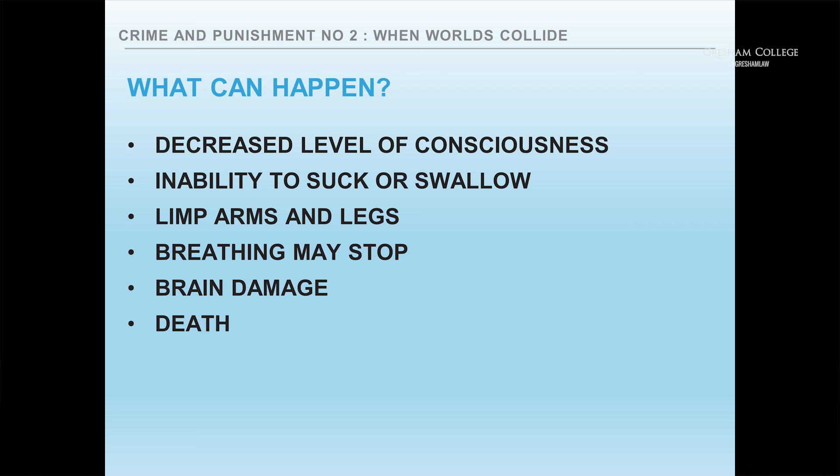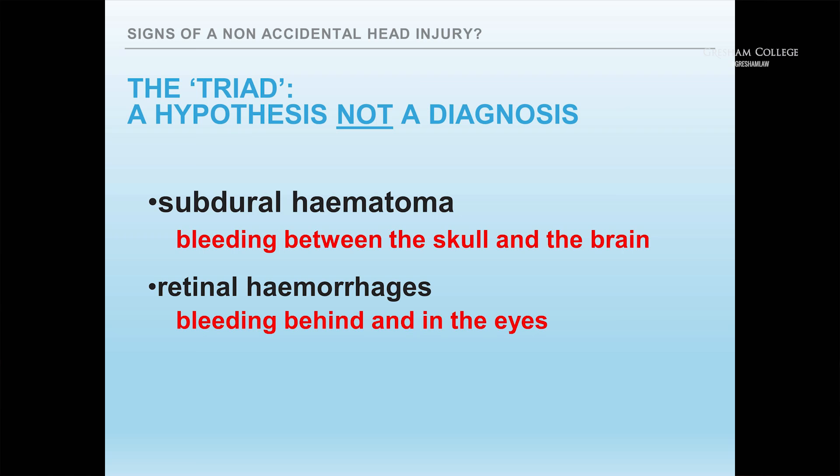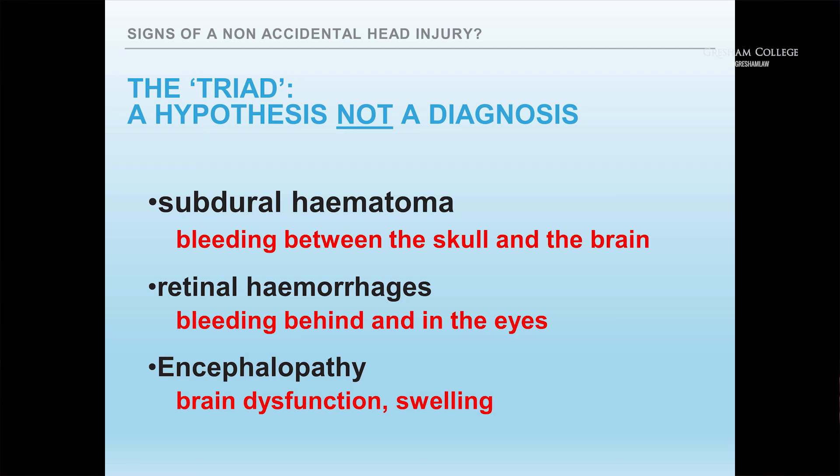When trying to reconstruct what's happened to a child, scientists and medics have provided us with something called the triad. The triad is a hypothesis — it is not a diagnosis, although far too often inexperienced lawyers and scientists treat it as such. It consists of: subdural haematoma — bleeding between the skull and the brain; retinal haemorrhages — bleeding behind and in the eyes; and encephalopathy — brain dysfunction and swelling.